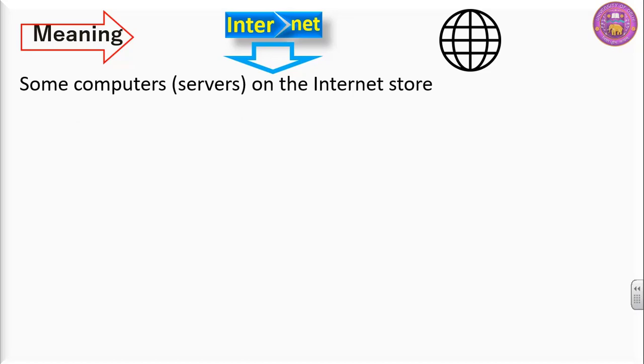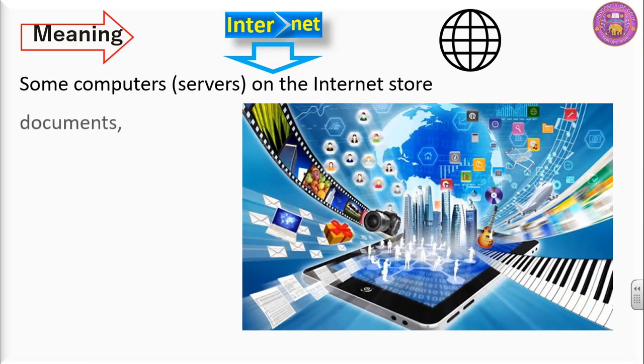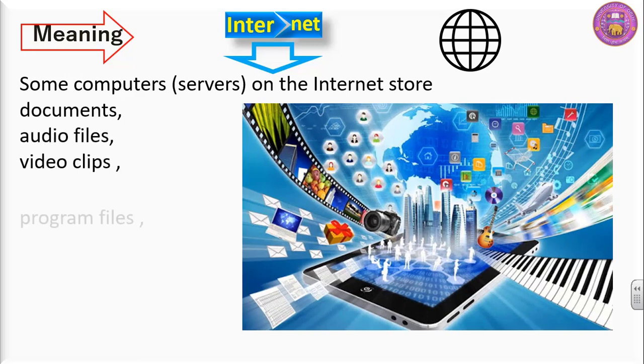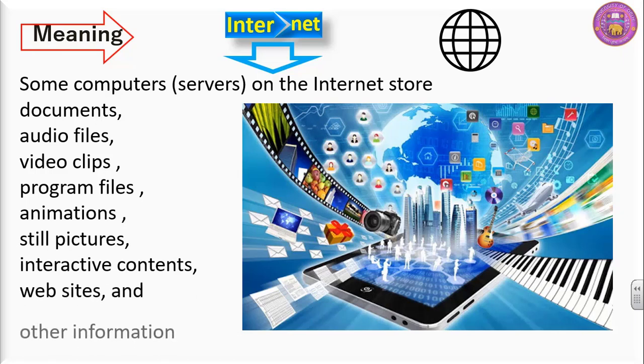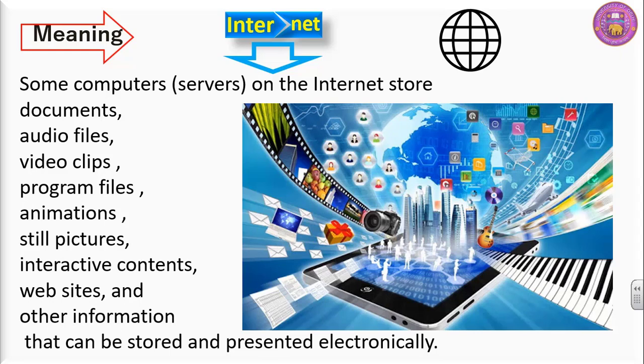Some computers that is servers on the internet store documents, audio files, video clips, program files, animations, still pictures, interactive contents, websites and other information that can be stored and presented electronically. It means any information that can be stored and presented electronically you can find them on some of the computers and these computers are connected to internet.